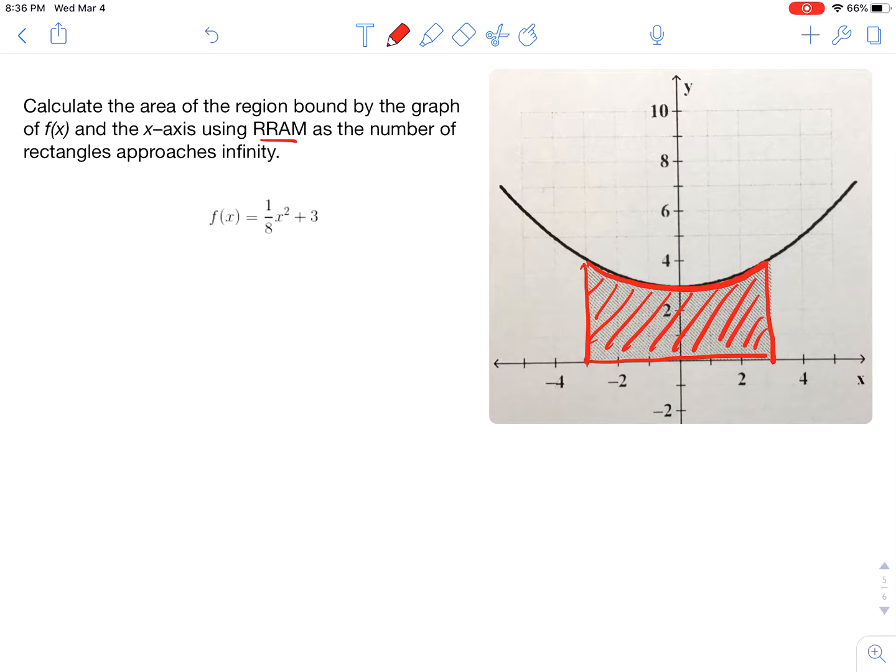We're going to use RRAM as the number of rectangles approaches infinity and we see that our left bound here is from negative 3 to the right bound which is positive 3 and here is our function f of x.